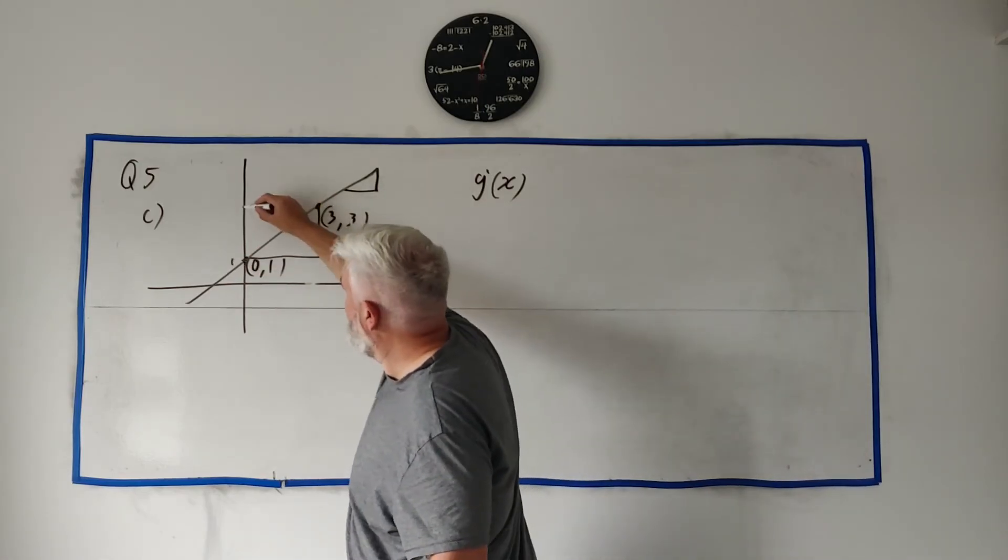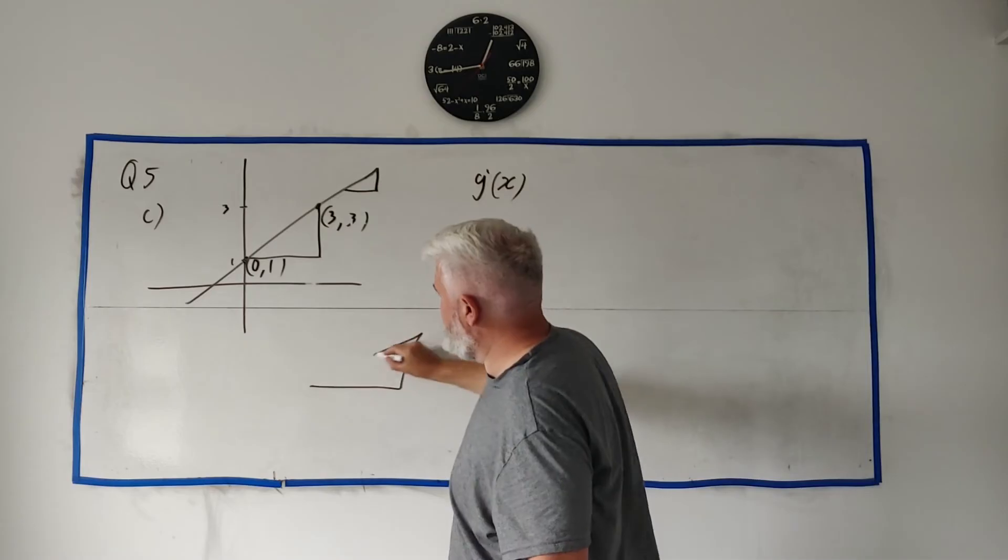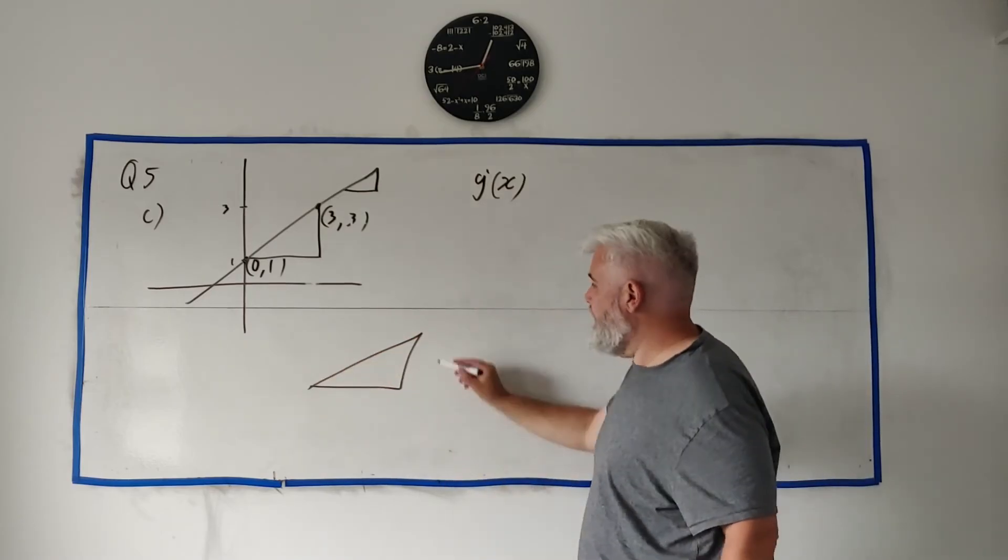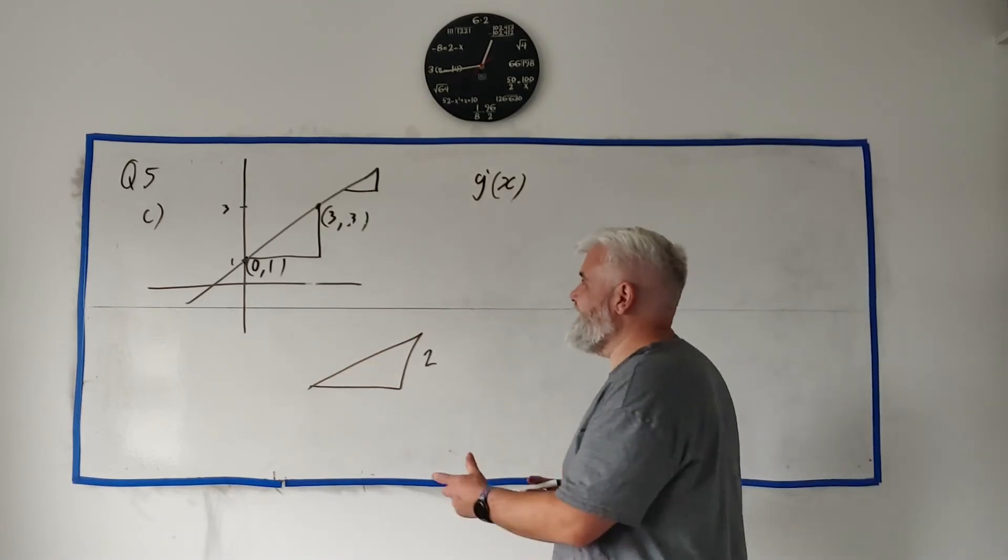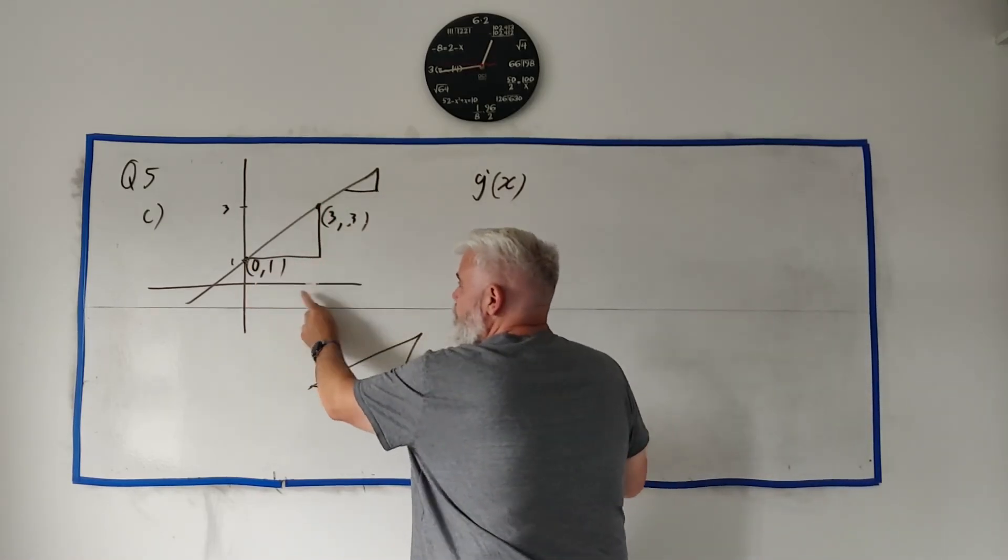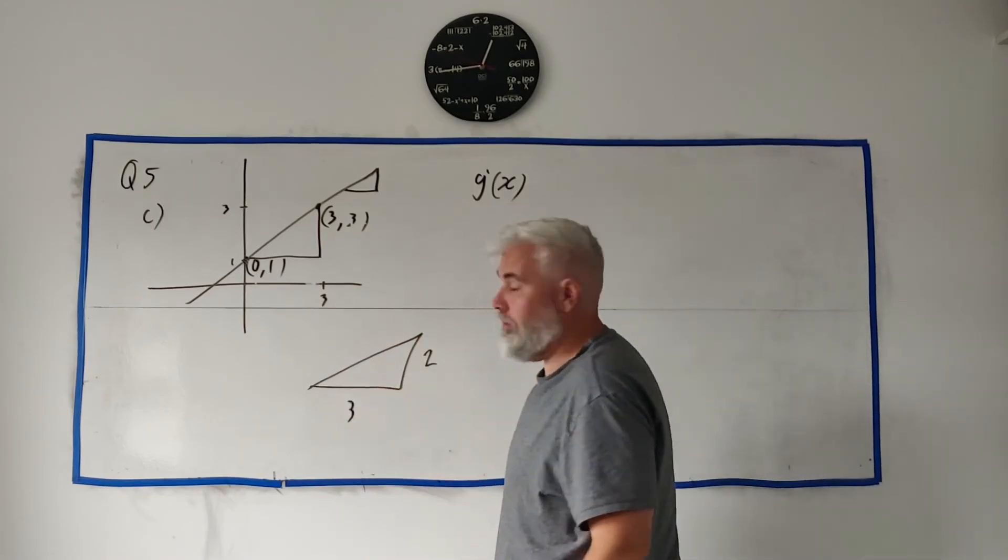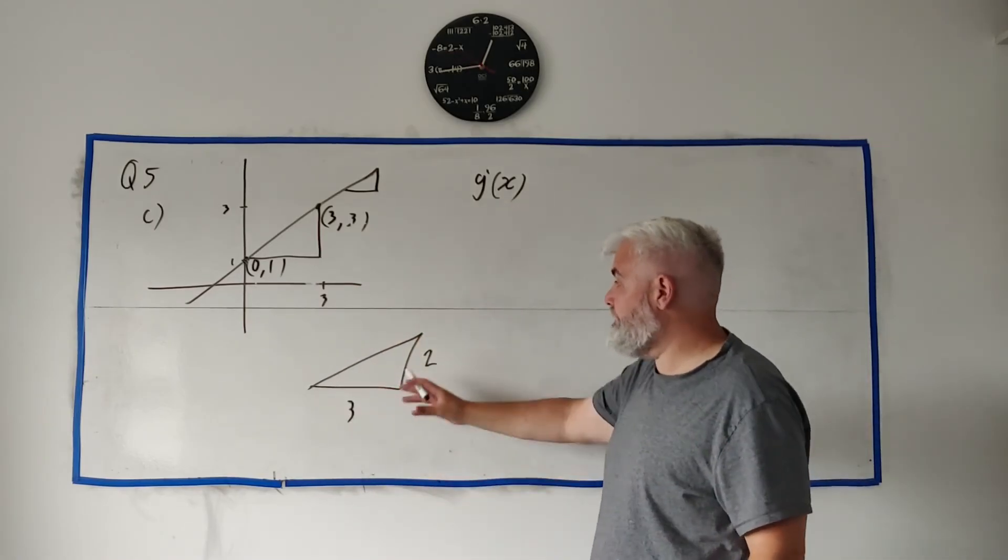It starts off one high and it goes to three high. It must be, let's draw it again over here, sorry a bit crooked. It's two tall, it's two units tall, and how long is it? It starts at zero, goes all the way to three, zero to three, it's three long.